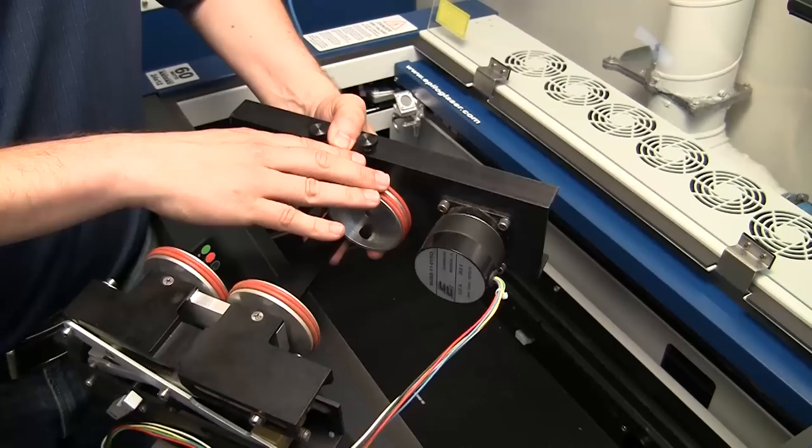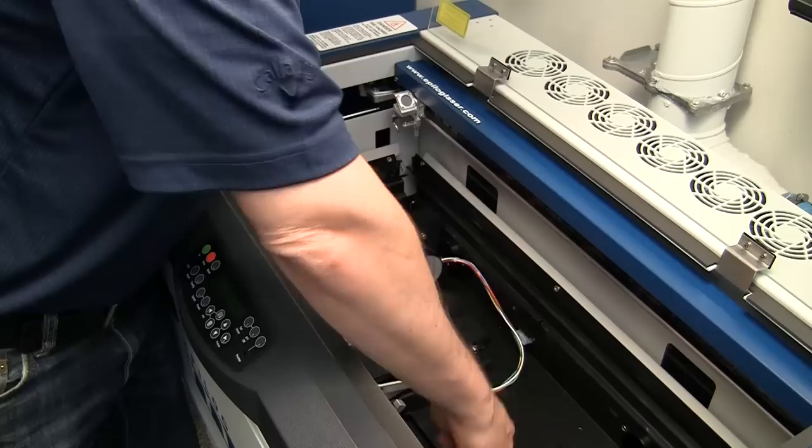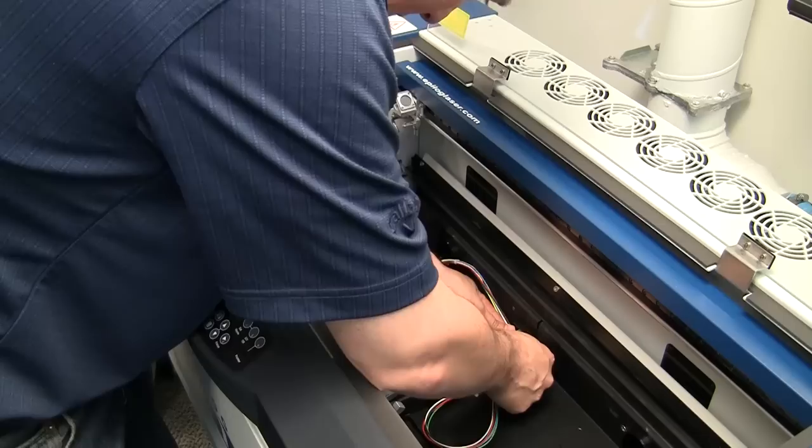Now this is our rotational device. What it does is it has four wheels here that the piece sits on top of, and it'll turn the piece as it engraves. I can move this piece up and down to level out the area as well. Inside the machine are three holes. I'll just set it inside and plug in the device.